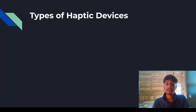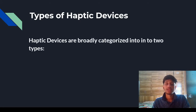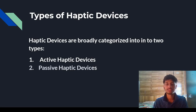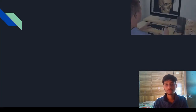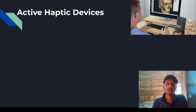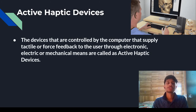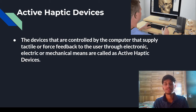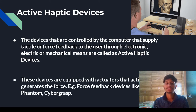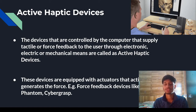There are two types of haptic devices: active and passive. Active haptic devices are controlled by the computer and supply tactile or force feedback to the user through electronic, electric, or mechanical means. These devices are equipped with actuators that actively generate force — for example, force feedback devices like Phantom or CyberGrasp.